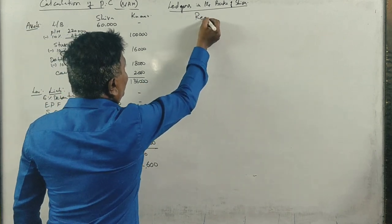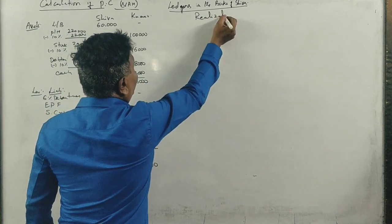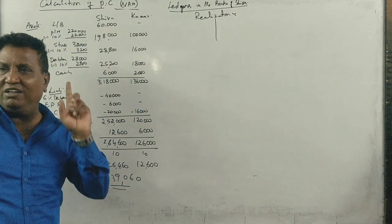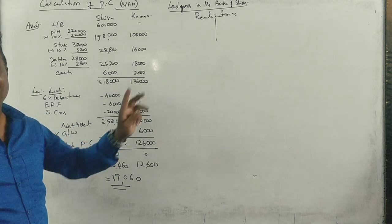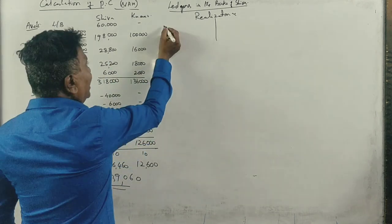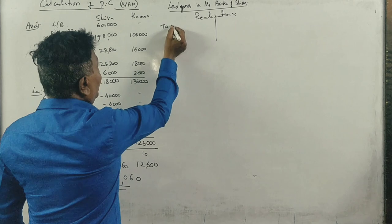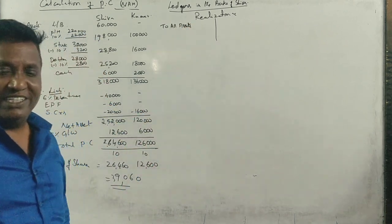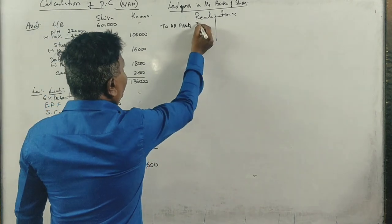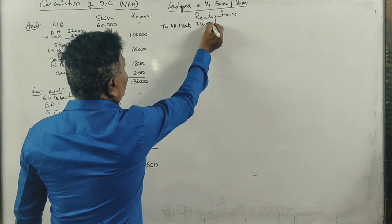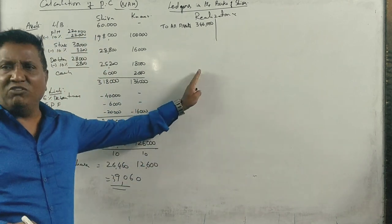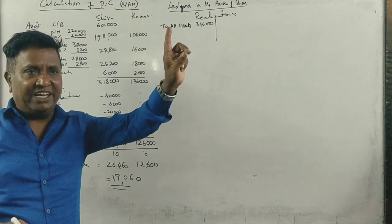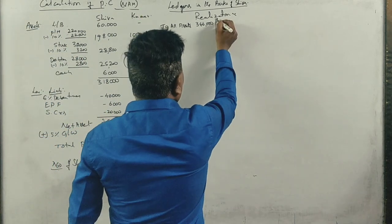One realization account. First realization account in Shiva company, total assets, all assets, total assets balance it 3,46,000 correct. Realization account, and you will have 3,46,000 assets in Shiva's case, 3,46,000 assets.